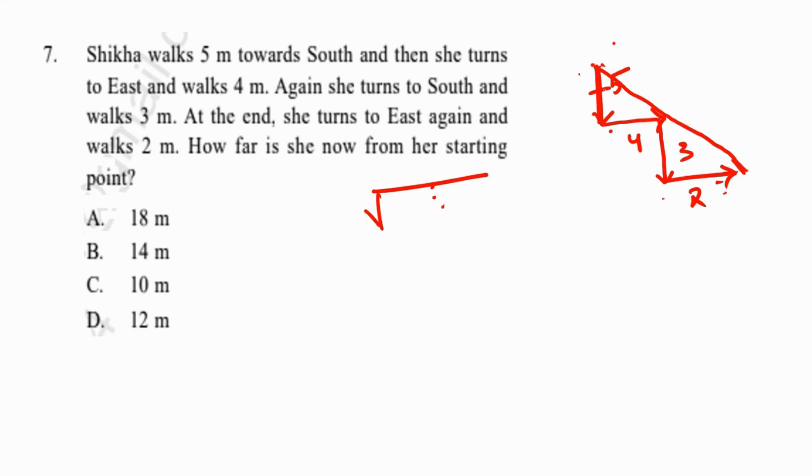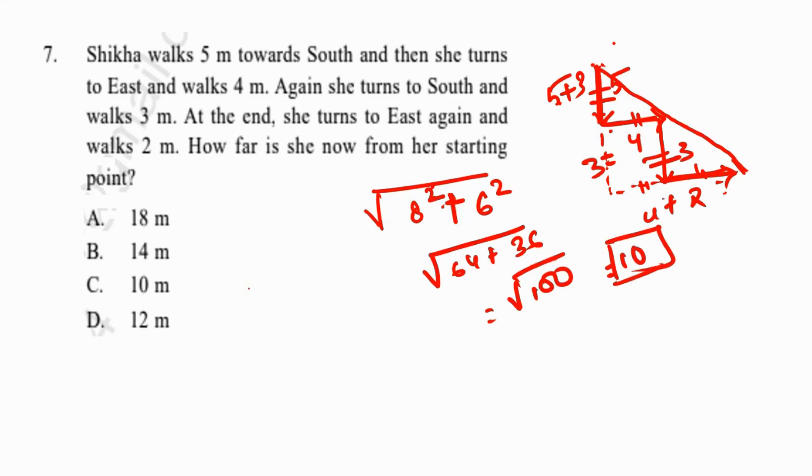The hypotenuse is the square root of height squared plus base squared. The height is 5 plus 3 equals 8. The base is 4 plus 2 equals 6. So it's the square root of 64 plus 36, which is the square root of 100, which equals 10 meters. That's the answer.